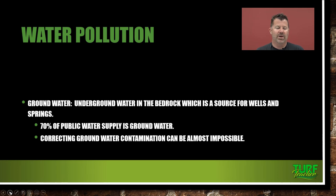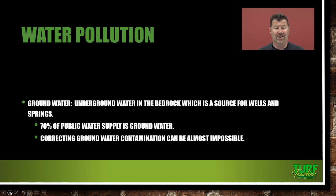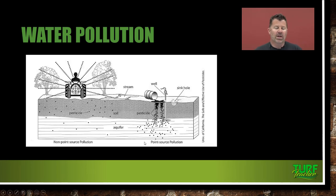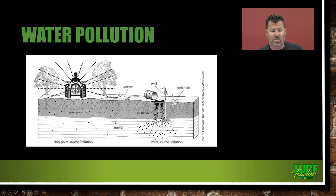Groundwater is underground water in the bedrock, which is a source of wells and springs — 70% of public water supply is groundwater. Correcting groundwater contamination can be almost impossible once it's done. Don't spray near wells and definitely don't have your shop or pesticide storage within even a hundred feet or so of those wells. The textbook has a good diagram showing non-point source pollution — a tractor spraying an orchard — and point source pollution — a five-gallon drum dumping off directly into a well. Very dangerous situation.